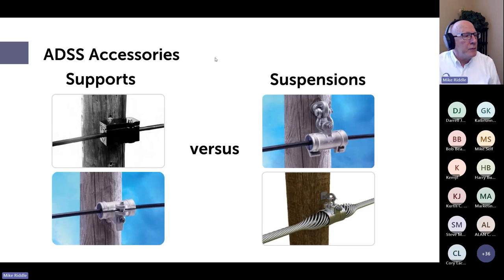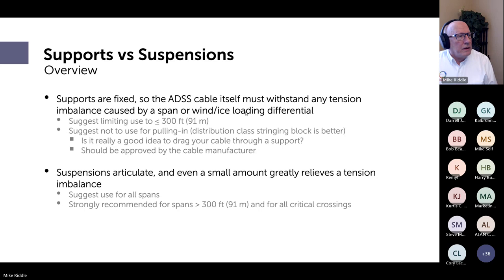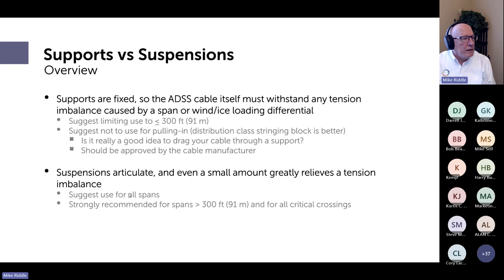Next: supports versus suspensions. A support is fixed at the structure, whereas a suspension is, as the name implies, suspended — attached to something with the ability to move a little bit. I prefer suspensions because that small amount of movement greatly relieves tension imbalance. I strongly recommend them for anything over 300 feet and any kind of critical crossing.